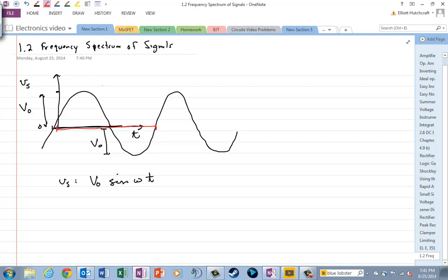That period we will call capital T, and that capital T is 1 over the frequency in hertz, f, and the radian frequency, omega, is equal to 2 pi f. So that's how we relate omega and f.